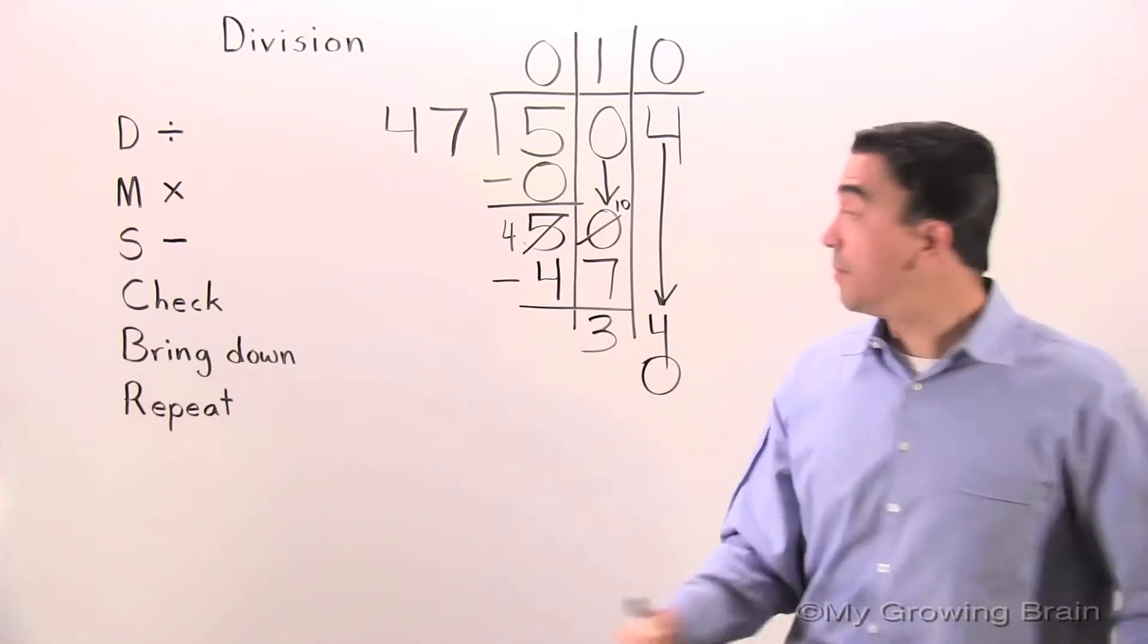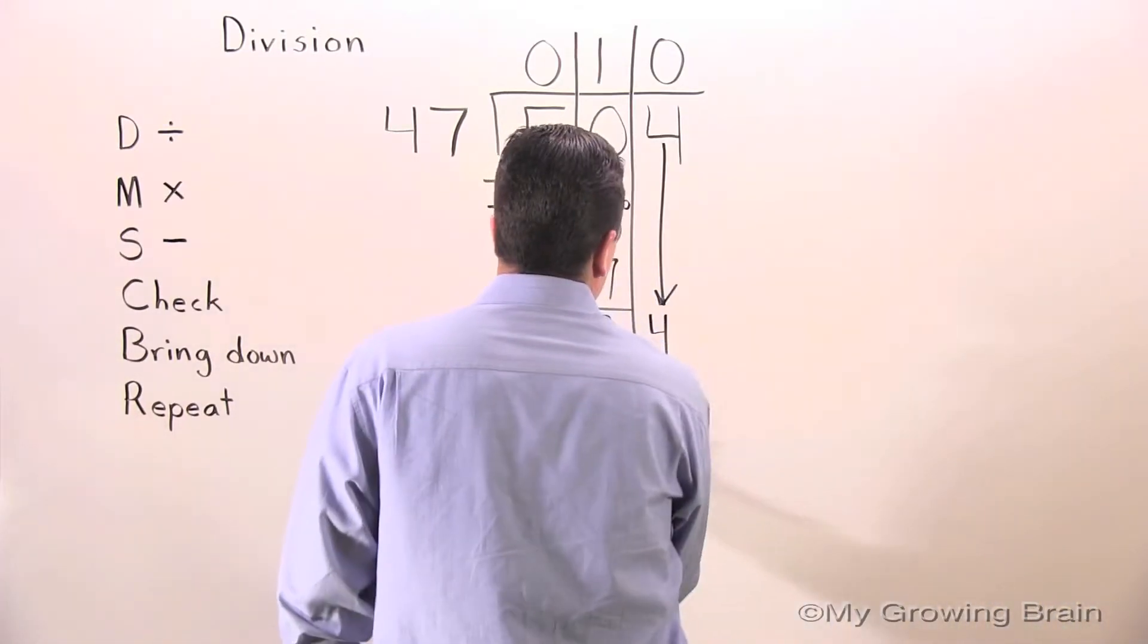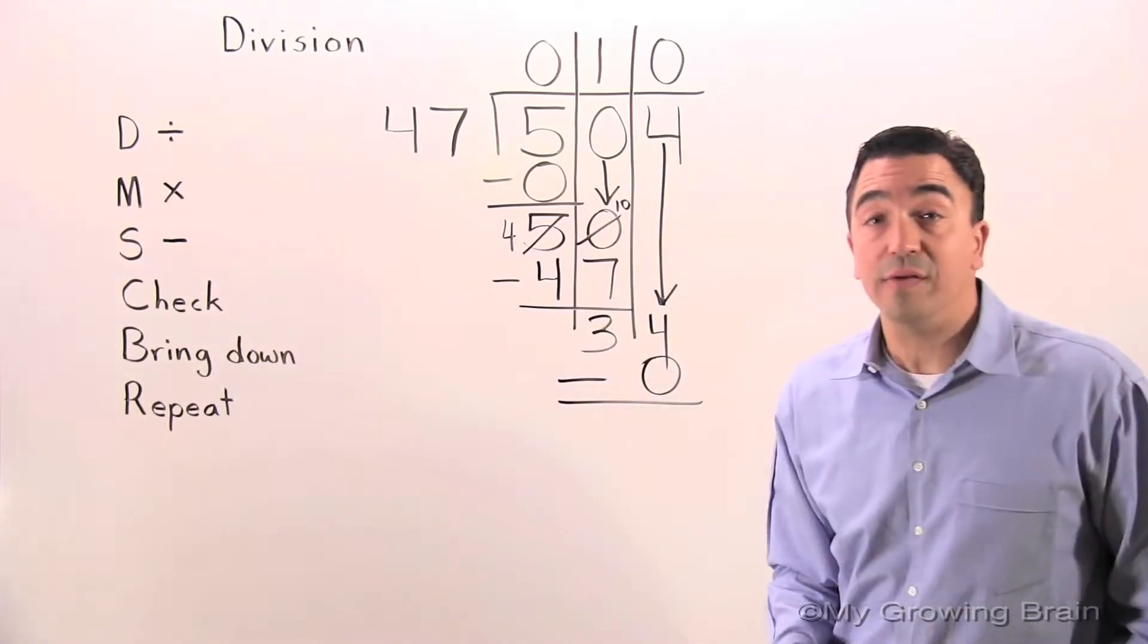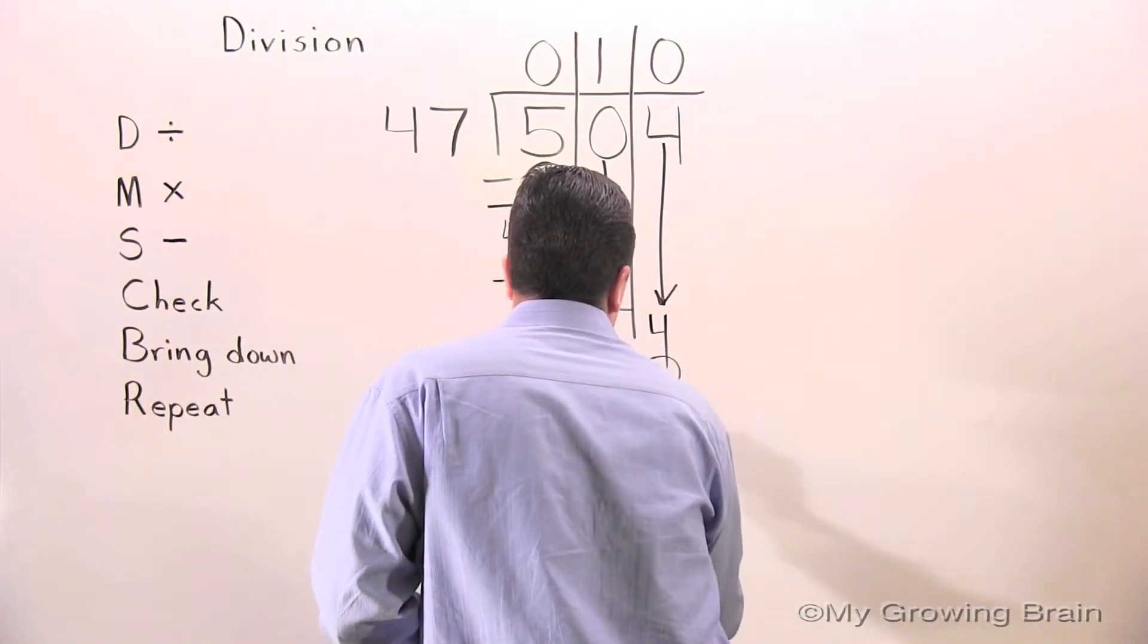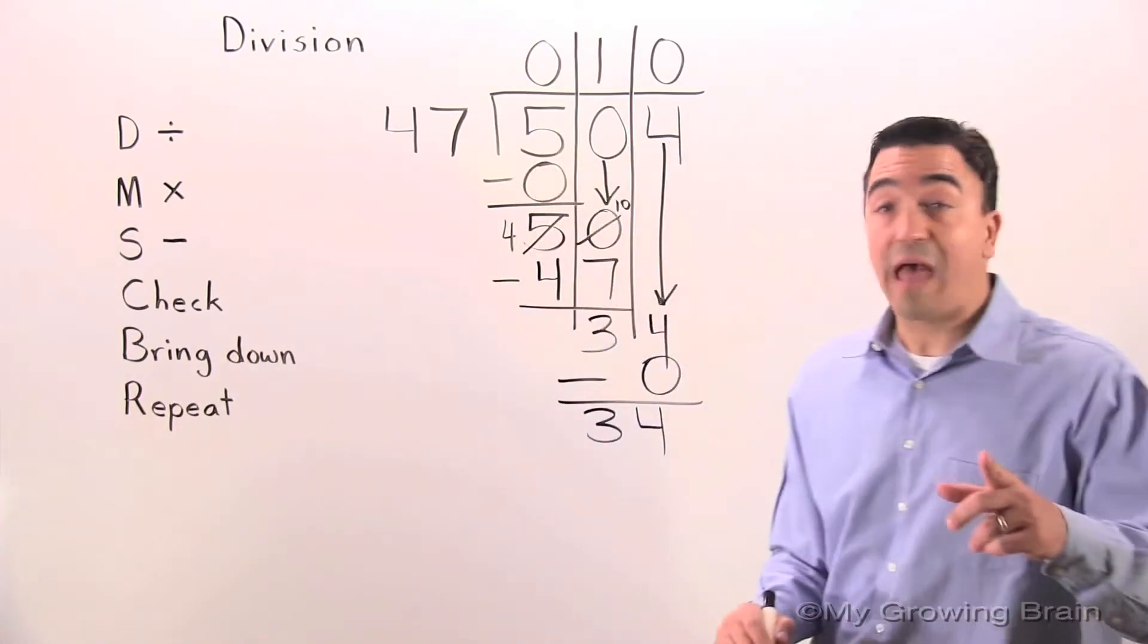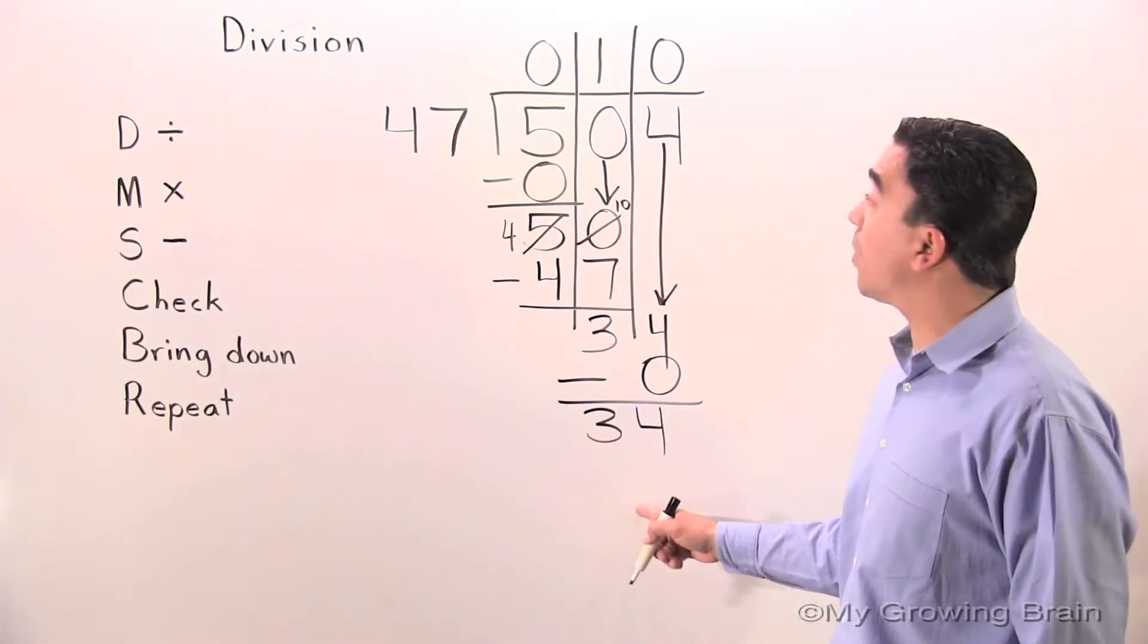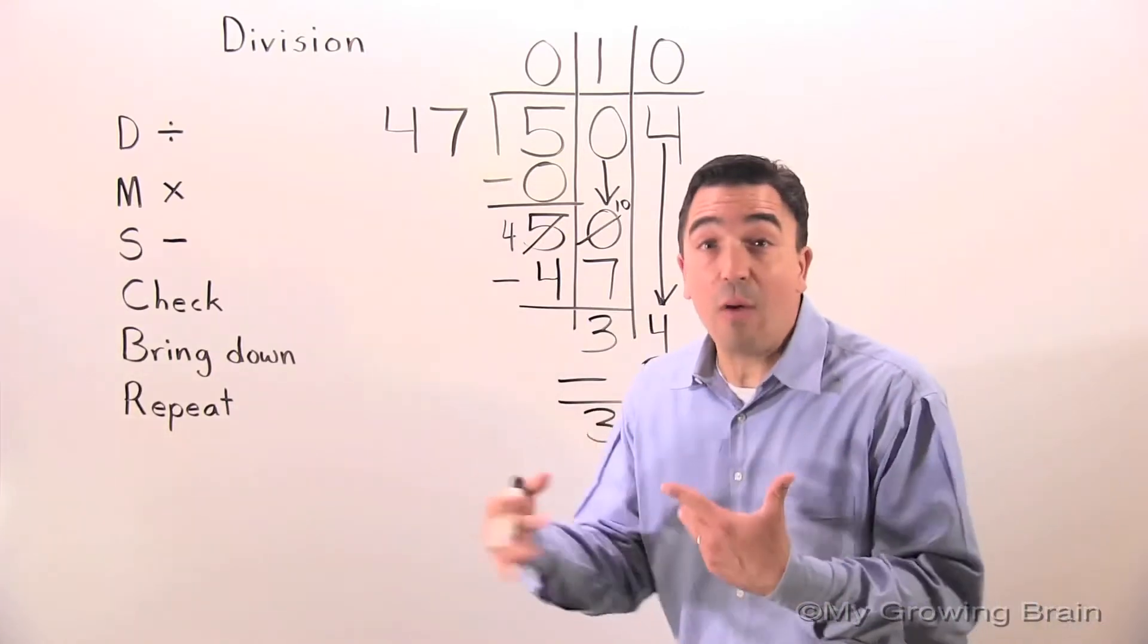Next step, subtract. 34 minus 0, 34. Next step, check. 34 is less than 47. Keep on going.